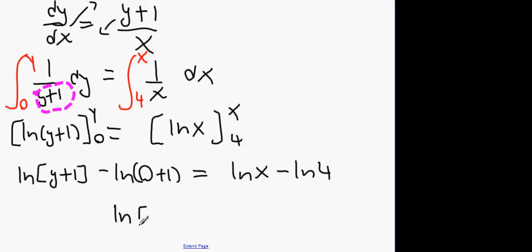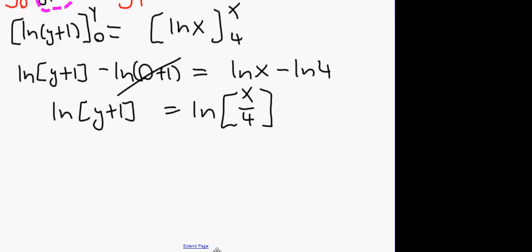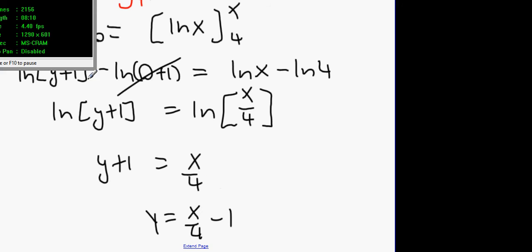LN(y+1). LN 1 is 0, isn't it? Yeah. So it's going to be LN(y+1). LN 0 is 0. Therefore that equals LN(x/4). And what we're going to do next is, we're going to know that y plus 1 therefore equals x over 4. Therefore, y equals x over 4 minus 1. That's the answer to it. Okay? Thank you.